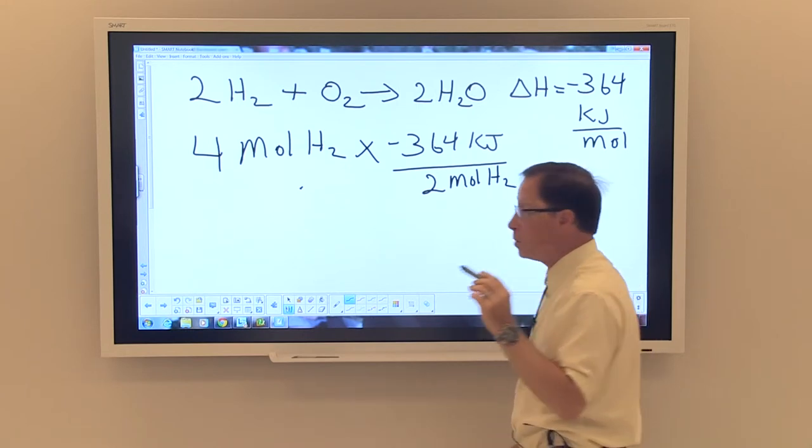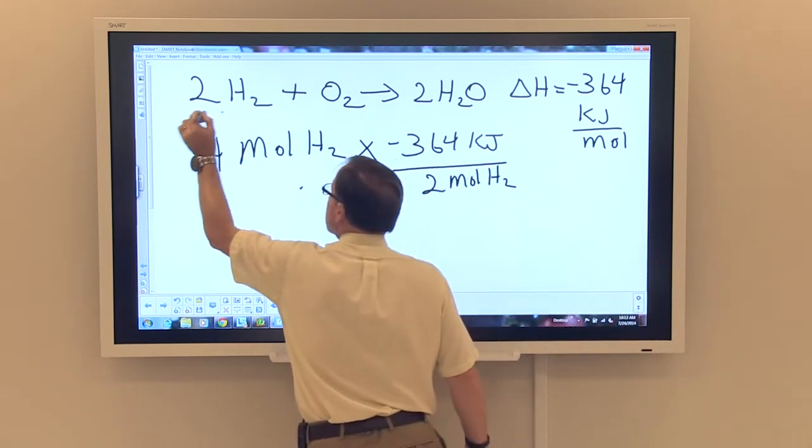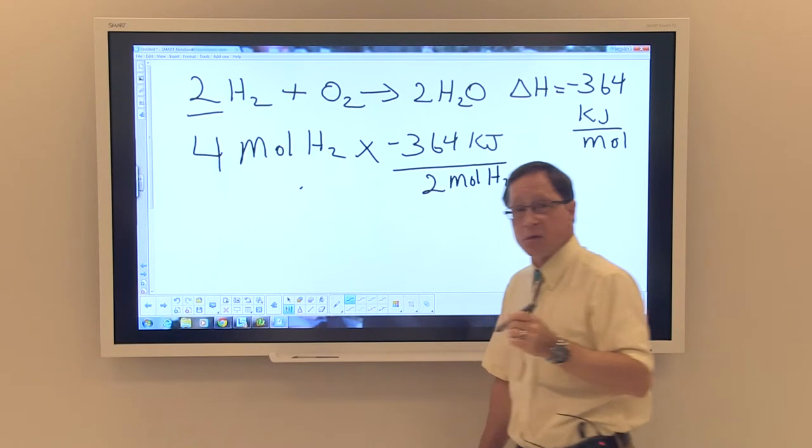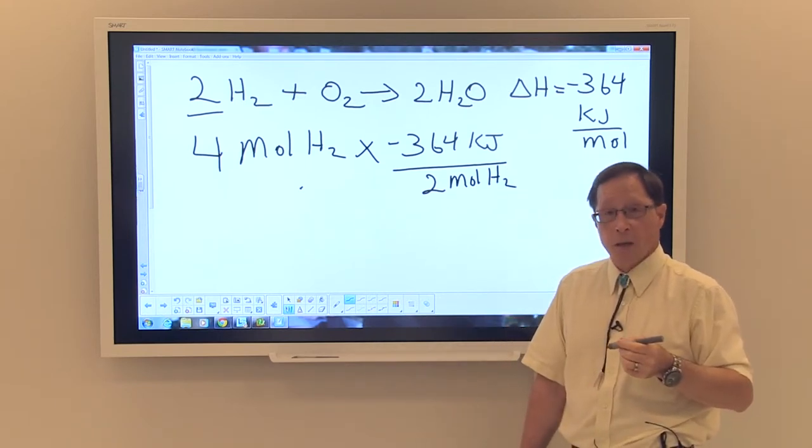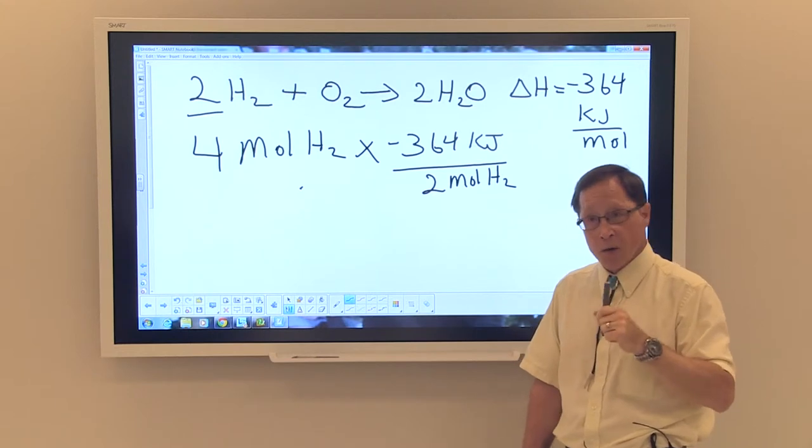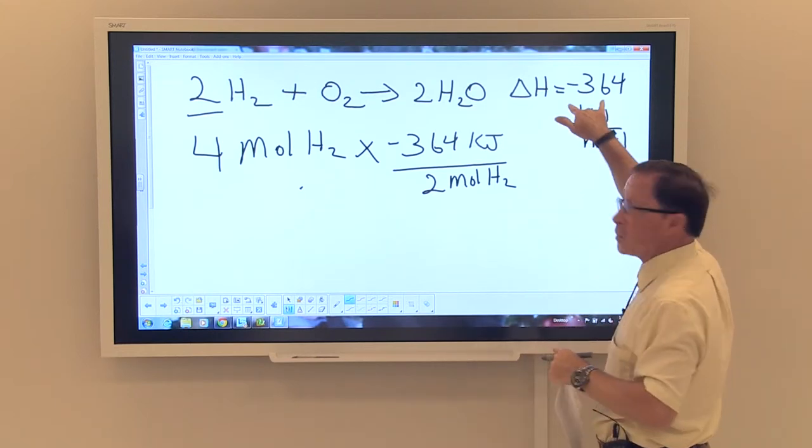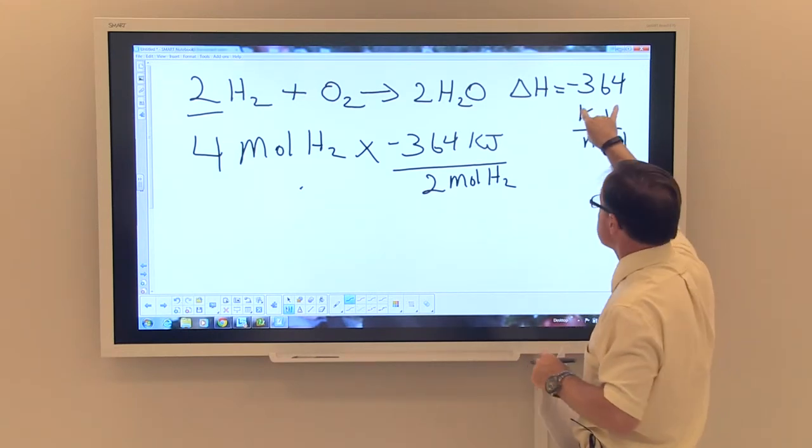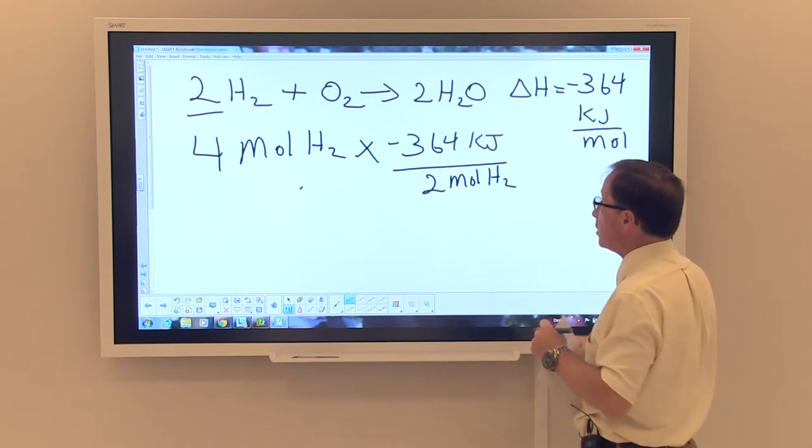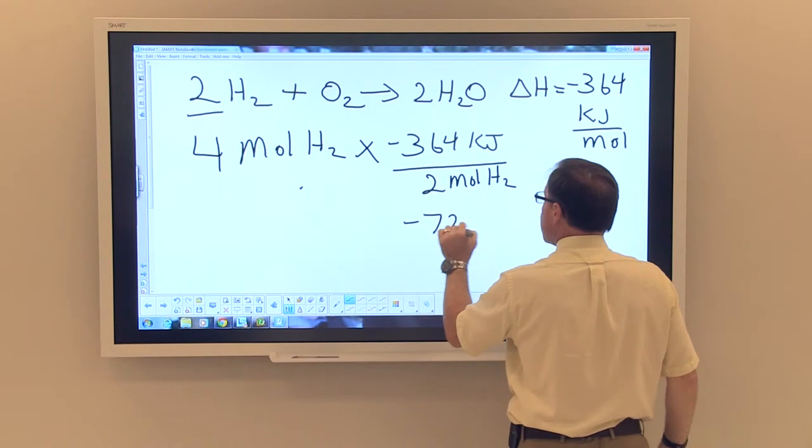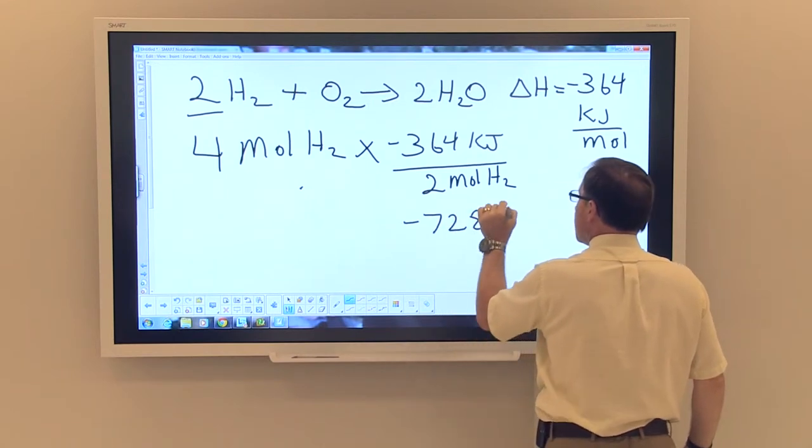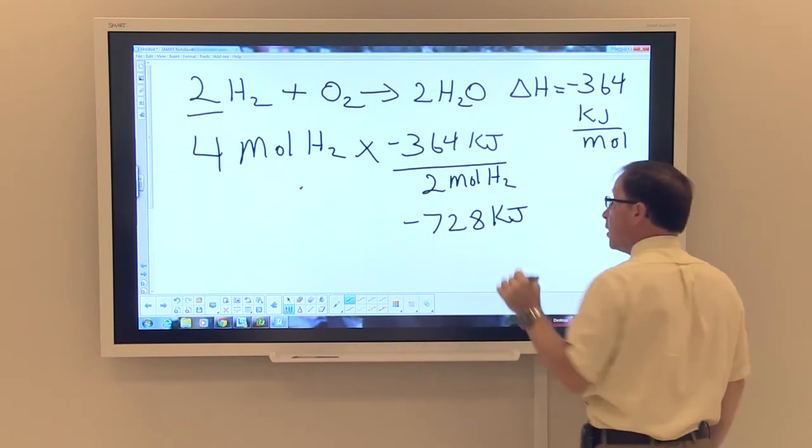The two comes from this coefficient here. And the answer to our question then would be that from four moles of hydrogen, we would double the amount of heat that would be emitted and we'll have a negative 728 kilojoules of energy.